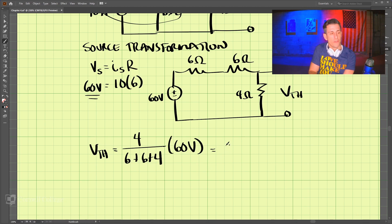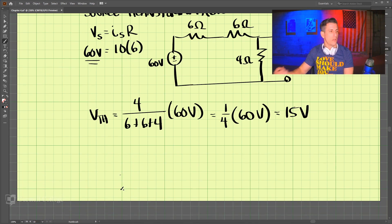So that is one-fourth, one-fourth times 60 volts. And that comes out to be 15 volts. So we have our Thevenin voltage.